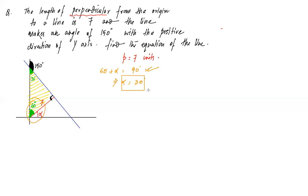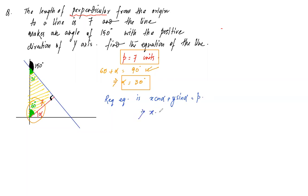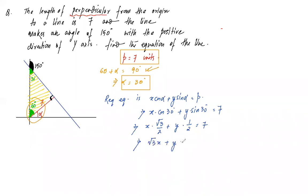We now have both values: p = 7 and alpha = 30°. Substituting into x·cosα + y·sinα = p gives x·cos30° + y·sin30° = 7, which becomes x·(√3/2) + y·(1/2) = 7. Taking LCM and solving: √3x + y = 14. This is the required equation of the straight line.